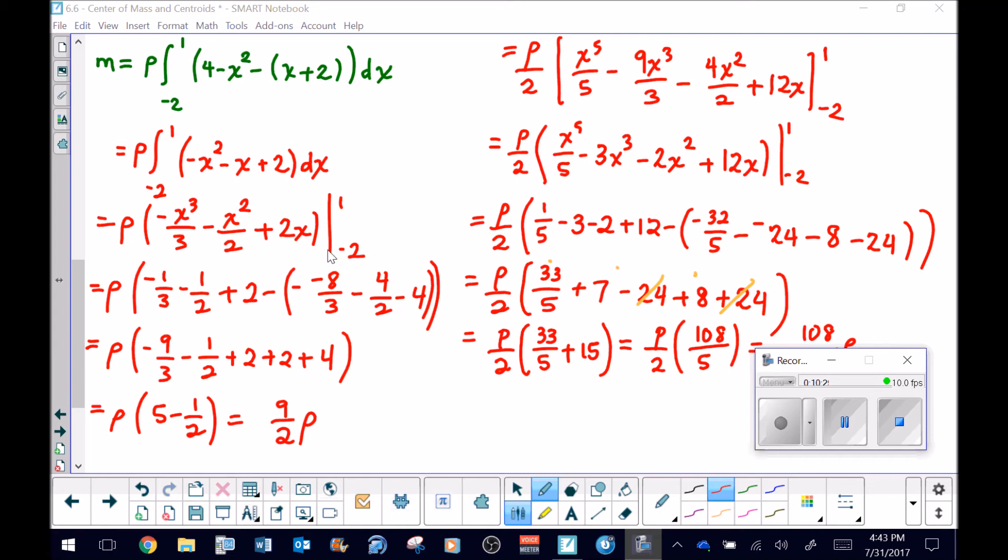We end up with this negative one-third minus one-half plus 2. This is the really tricky part when dealing with a boundary that's negative and you might have some odd exponents. Things can get very tricky, so take your time. That's why I decided to show all the negative signs. Take a look at that, make sure you agree. The next two steps are just my way of trying to simplify the integers and fractions as best I could. I ended up with nine-halves times ρ.